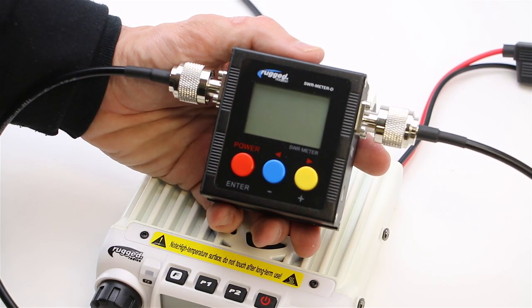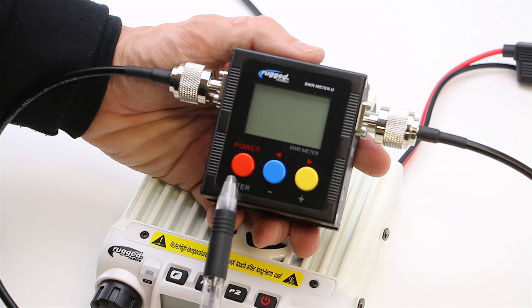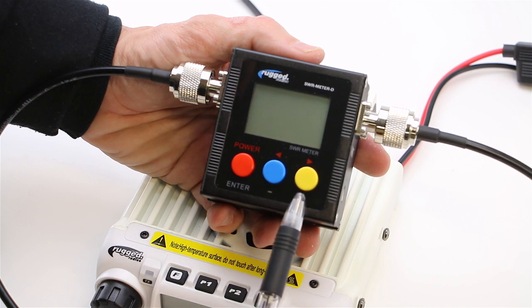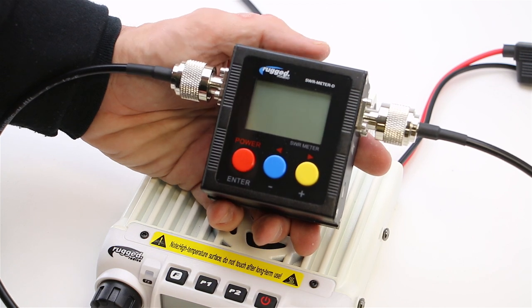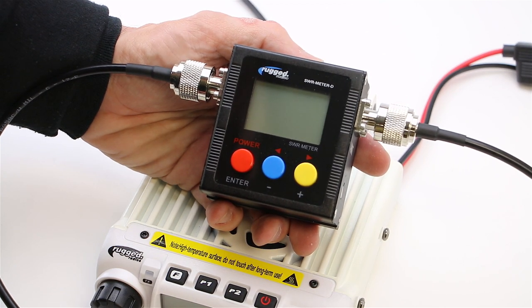The SWR meter has three buttons: a red power button, a blue menu button, and yellow navigation button. By default, the SWR meter is set to go as is and requires no menu changes.